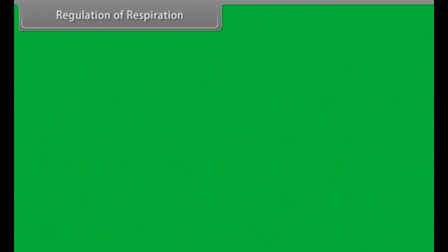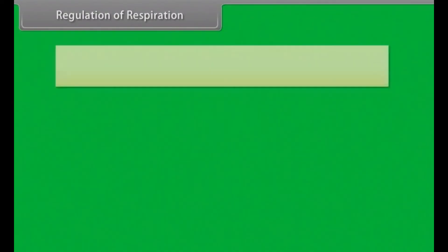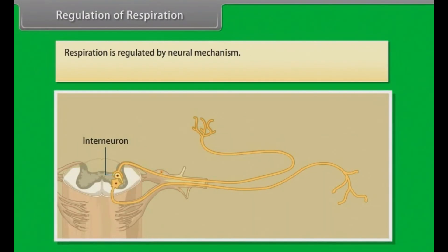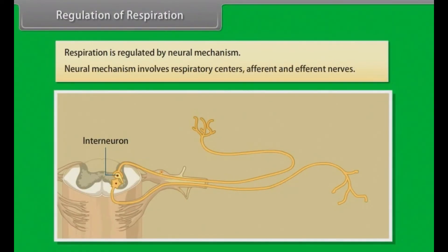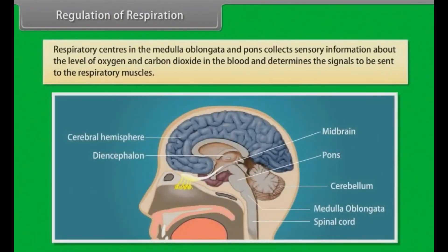Regulation of Respiration. Respiration is regulated by a neural mechanism. This neural mechanism involves respiratory centers as well as afferent and efferent nerves. Respiratory centers in the medulla oblongata and pons collect sensory information about the levels of oxygen and carbon dioxide in the blood and determine the signals to be sent to the respiratory muscles.